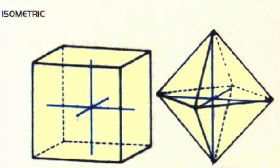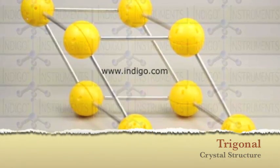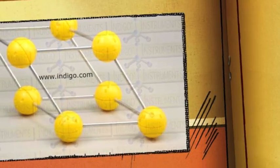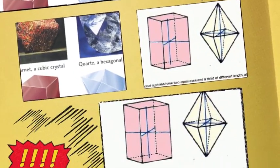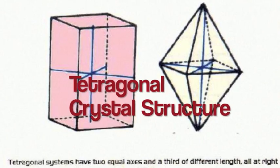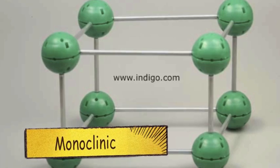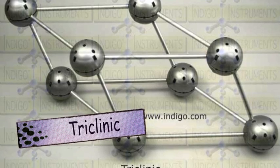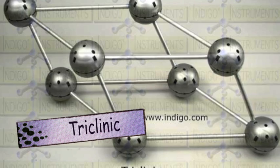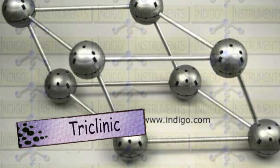There are seven main shapes of crystals: isometric, trigonal, hexagonal, tetragonal, orthorhombic, monoclinic, and triclinic. Scientists use X-rays to examine the crystal lattice and place the crystal into one of those groups.